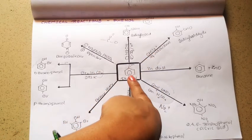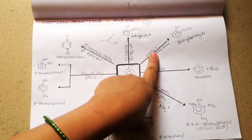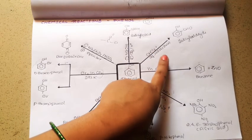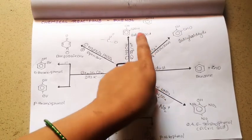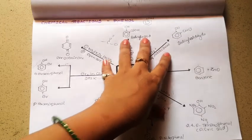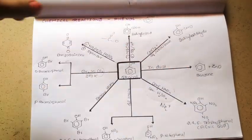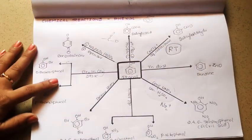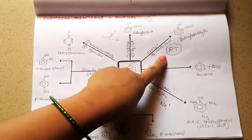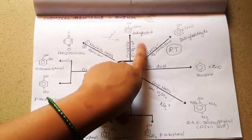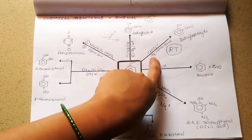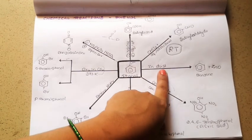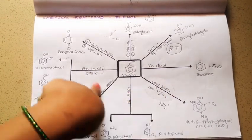Whenever phenol is treated with CHCl₃ (chloroform), followed by excess aqueous sodium hydroxide, you get a product called salicylaldehyde. This is a famous named reaction called Reimer-Tiemann reaction. So Kolbe's reaction gives salicylic acid, while the Reimer-Tiemann reaction — using chloroform and excess NaOH — gives salicylaldehyde.